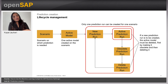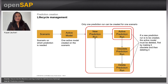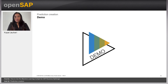For a particular scenario, only one prediction run can exist at a time for one active model. So this is about prediction run — what is a prediction, how you can see it, how you can create the prediction run, where you can see it, and what its life cycle is. Now let's do a deep dive into the system and see how you can create the prediction run.